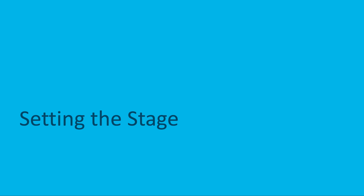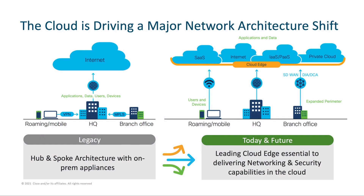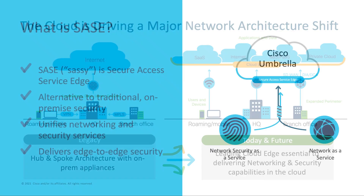Now, before we get started, a bit of a level set. In the old days, an organization's network and security architecture revolved around the data center, which makes sense since most of the crown jewels to an organization lived within these facilities. But fast forward to the cloud age, where we are today, and you're starting to see more and more business-critical functions hosted outside the organization's perimeter. Technologies like SD-WAN help us to efficiently route traffic to these resources, but how do we secure this traffic? Of course, there are all sorts of legacy methods, like on-premise firewalls, but that's where SASE comes in to offer an alternative.